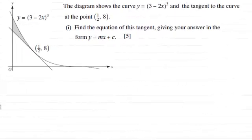Hi there. Now in this question we're given this diagram and it shows the curve y equals 3 minus 2x all cubed, and the tangent to the curve at the point with coordinates half, eight. What we've got to do is find the equation of this tangent, giving your answer in the form y equals mx plus c for five marks.